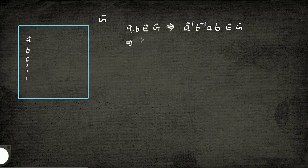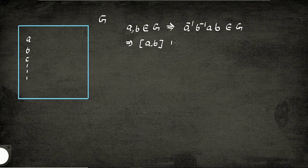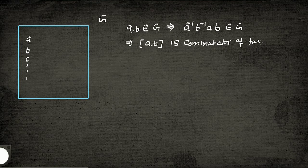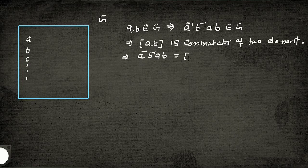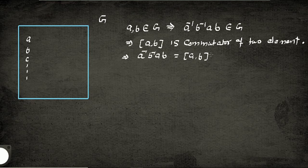This commutator can be written in bracket notation as [A, B]. So whenever you see [A, B] written inside a group context, you understand it is a commutator element. This is written as A inverse B inverse A B — that is the commutator of two elements.